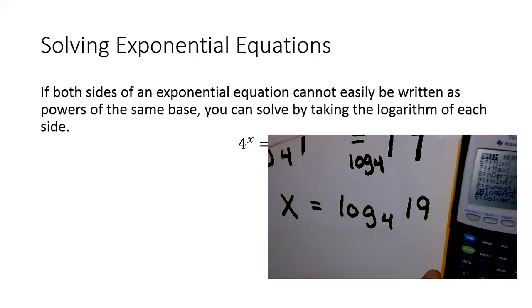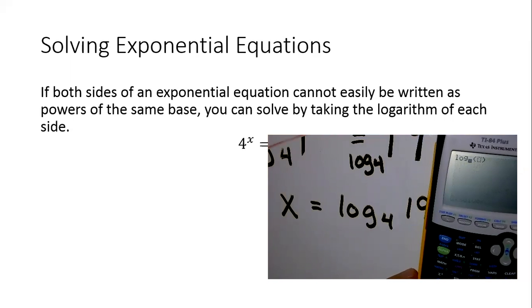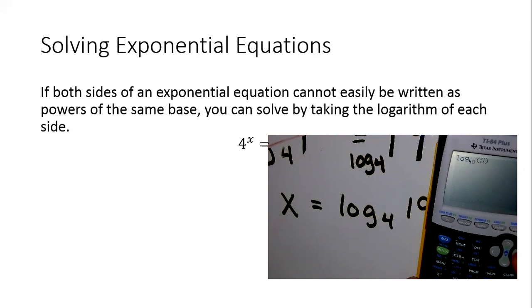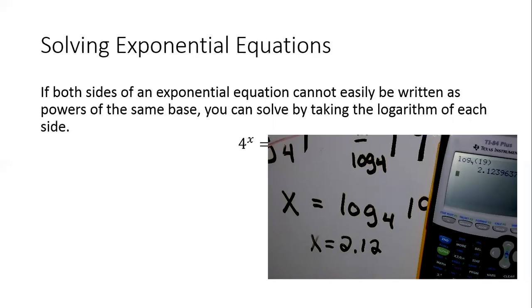So if you can see that, we have log base. So if I hit log base, I can just type the base. The base is 4, my argument is 19, and that gives me 2 point, I'm just going to do two places, 2.12.